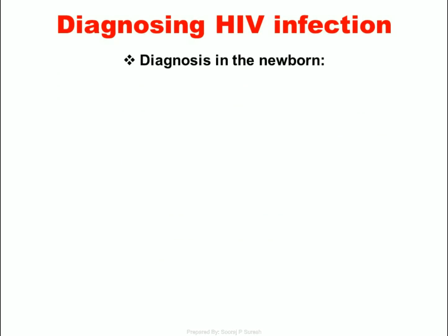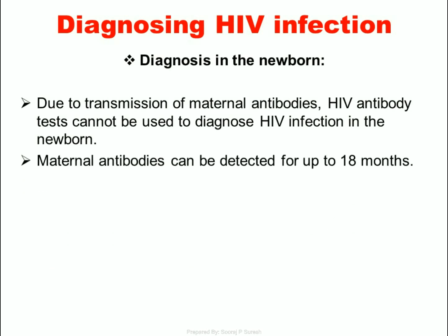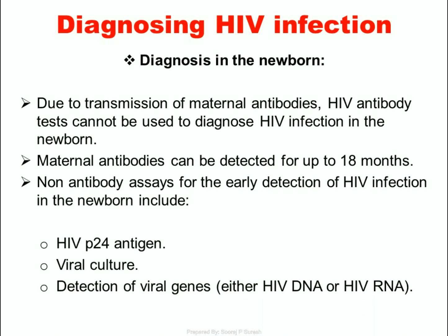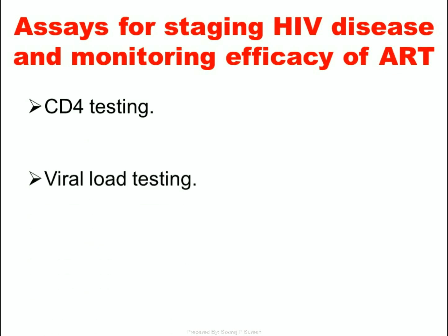Diagnosing HIV infection in the newborn: Due to transmission of maternal antibodies, HIV antibody tests cannot be used to diagnose HIV infection in the newborn. Maternal antibodies can be detected for up to 18 months. Non-antibody assays for early detection in the newborn include HIV P24 antigen, viral culture, and detection of viral genes (either HIV DNA or HIV RNA). Assays for staging HIV disease and monitoring efficacy of antiretroviral therapy (ART) include CD4 testing and viral load testing.